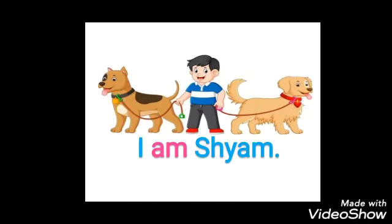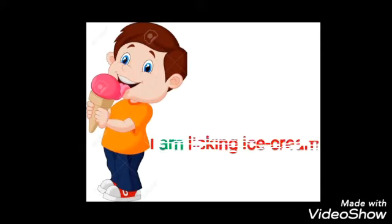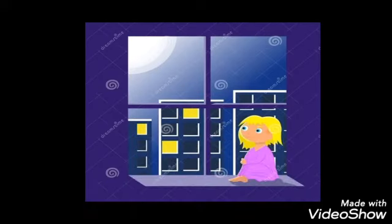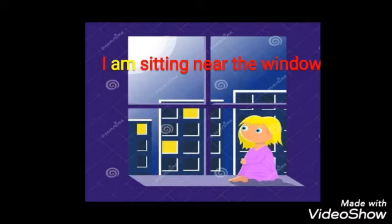Now let's see some examples. I am Sham — I matlab main, am matlab hoon, main Sham hoon. I am licking ice cream. Lick ka matlab hota hai chaatna. Here am is coming with I — main ice cream ko lick kar raha hoon. I am sitting near the window — I matlab main, am matlab hoon, sitting matlab baithi hoon, near the window matlab window ke paas. Main window ke paas baithi hoon.